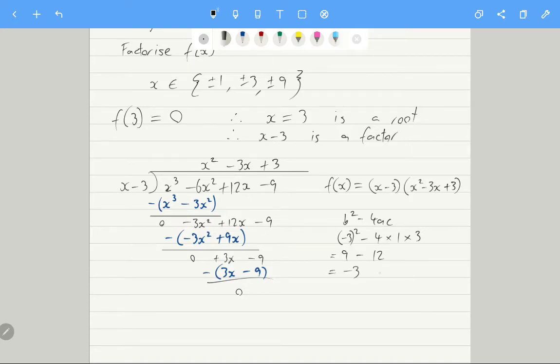Which is -3. When the discriminant is less than 0, there are no solutions. That means that there is only one root. And the only root is at x = 3.